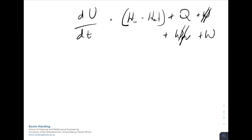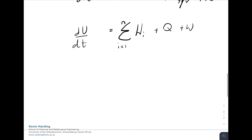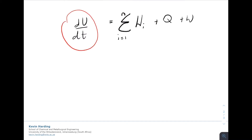Just as the mass balance had one or many inlet and outlet streams, the energy balance has H_in minus H_out, but there could be one, two, three, or four streams. We generalize this using summation notation: dU/dt equals the summation for i from 1 to n of H_i, plus Q plus W. The left-hand side, dU/dt, represents whether the system is at steady state — it is the change inside the system.